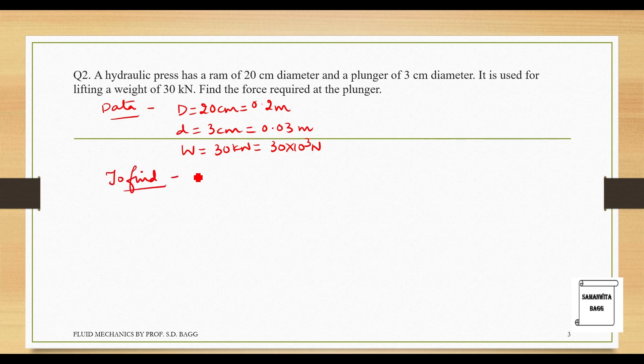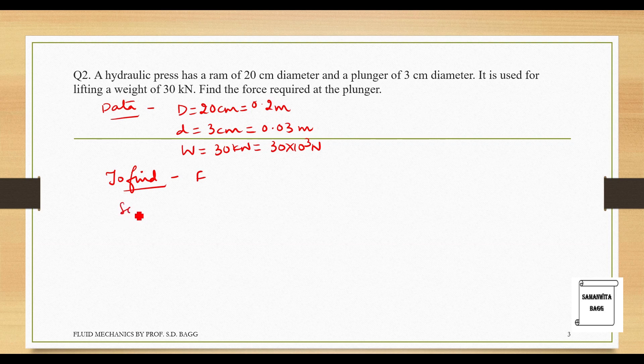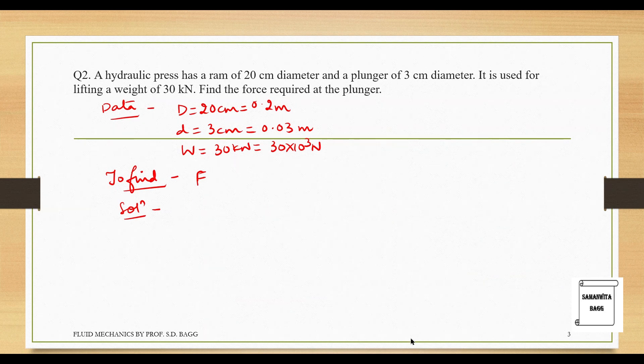In this numerical, the case is just reversed. You have to calculate the force at the plunger and the value of weight is given. This is the same diagram that you can draw for this case as well. I am not redrawing the diagram. You can redraw the diagram. So, I will just start by Pascal's law.